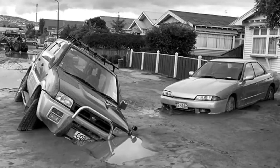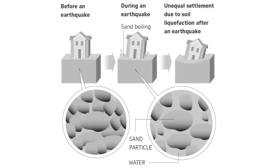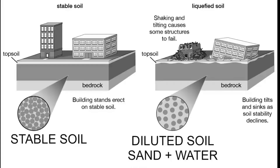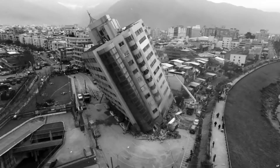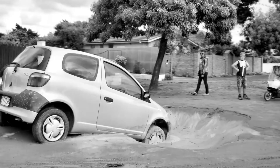Soil liquefaction occurs when saturated soil loses its strength and stiffness in response to an applied stress such as shaking or other sudden changes such as a strong explosion. Loose saturated soil or sand has a tendency to compress when a load is applied, but in the event of a stress such as shaking or an explosion we see the opposite. The soil tends to dilate and the result is treacherous quicksand or quick clay. The land turns to liquid causing structures of heavy mass such as buildings, infrastructure, and cars to start sinking, topple over, or collapse.